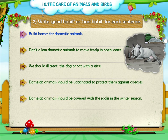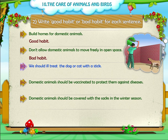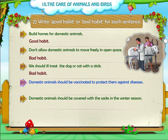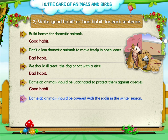Activity: Identify good or bad habits. Build homes for domestic animals — Good habit. Don't allow domestic animals to move freely in open space — Bad habit. We should ill-treat the dog or cat with a stick — Bad habit. Domestic animals should be vaccinated to protect them against diseases — Good habit. Domestic animals should be covered with sacks in the winter season — Good habit.